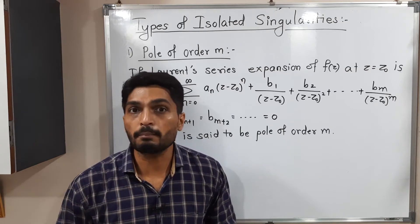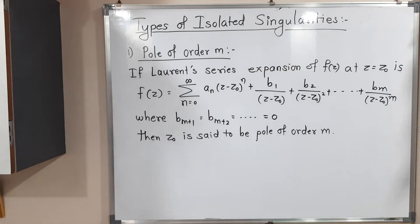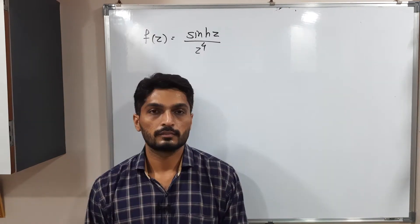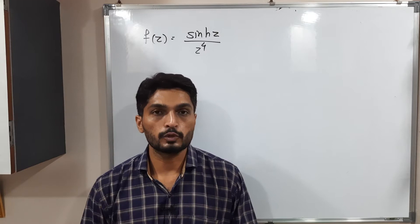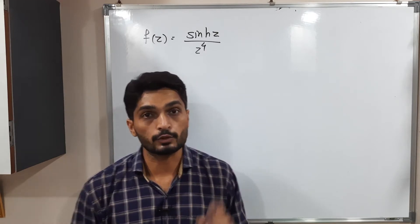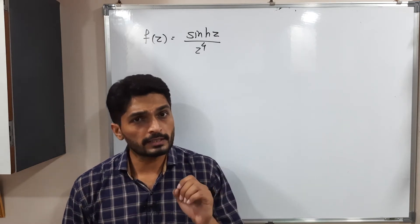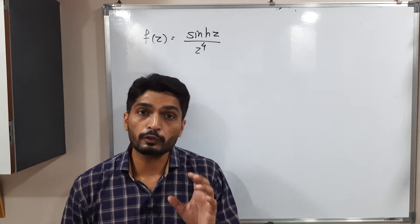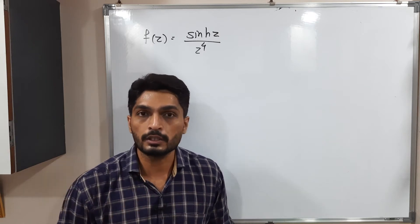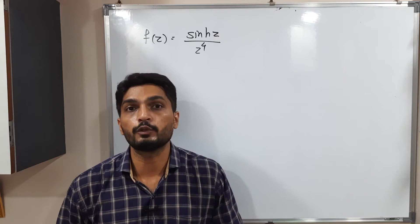Let us discuss one example so your concept will be clear. In this example, we have the function sinh(z) divided by z raised to four. As you can see here, what is the singular point? If I put z equals zero, then the denominator will be zero. So z equals zero is a singular point. It is a pole of order something; that order we need to find here.